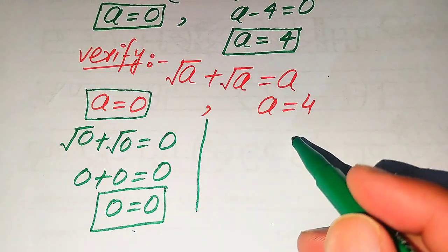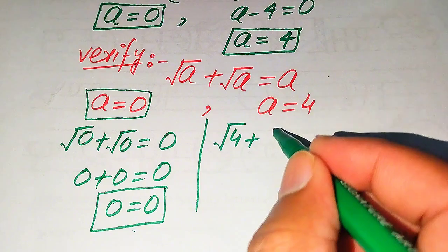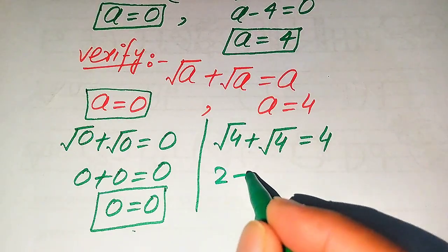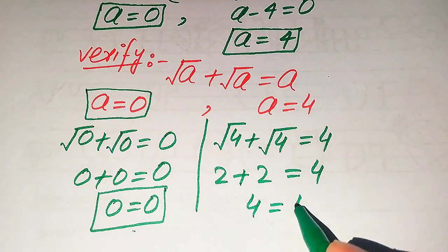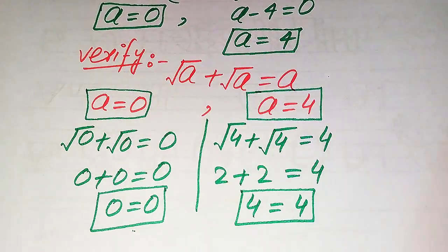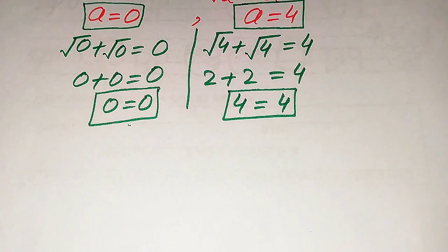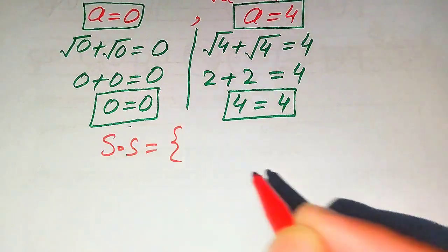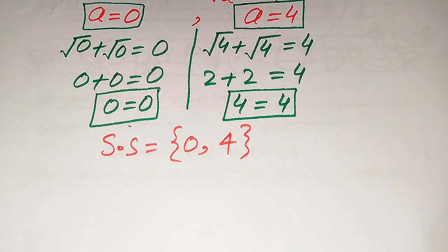Now we verify a equals four. Substituting into the equation: square root of four plus square root of four equals four. Since square root of four is two, we get two plus two equals four, which gives four equals four. This shows that a equals four also satisfies the given equation. Therefore, our final conclusion is that both values satisfy the equation, so the solution set is {0, 4}.